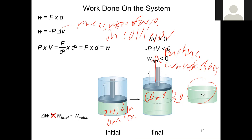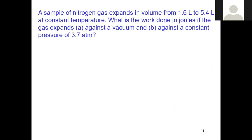The change in work here is not simply final minus initial because it's more complicated than that — you've got distances and forces involved. Work is not a state function because the path does matter in those conditions.